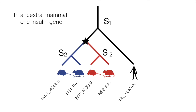Here, the node with a star indicates a duplication event, and the nodes labeled with S indicate a speciation event. S1 is the mammalian speciation, while S2 is the rodent speciation.